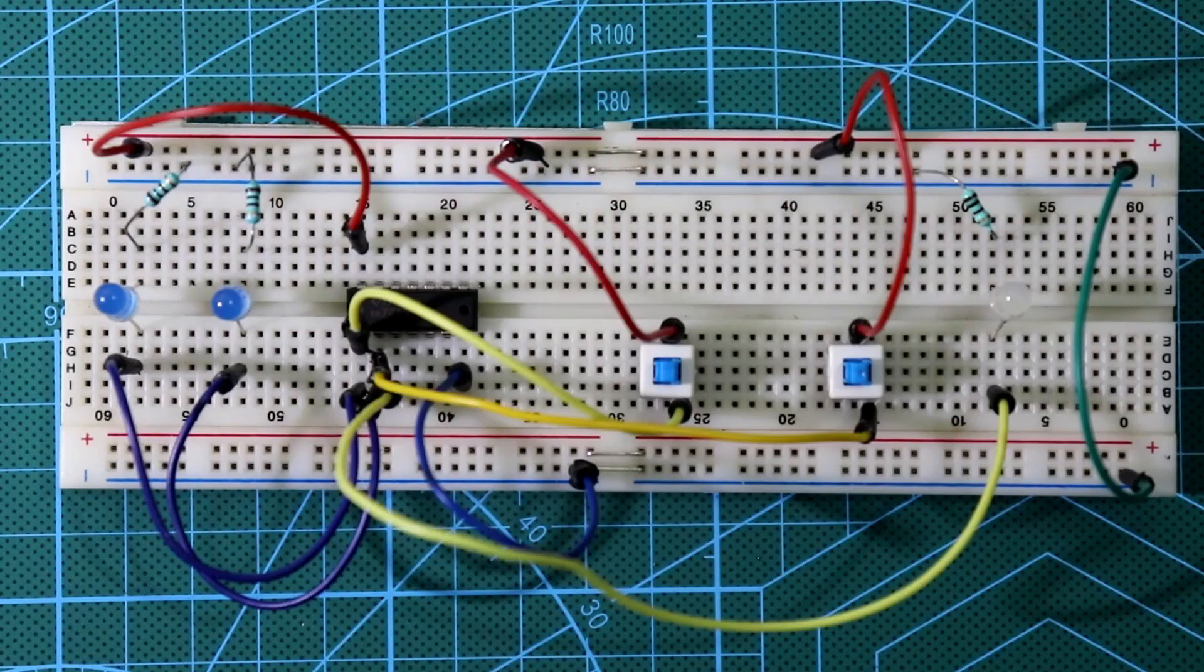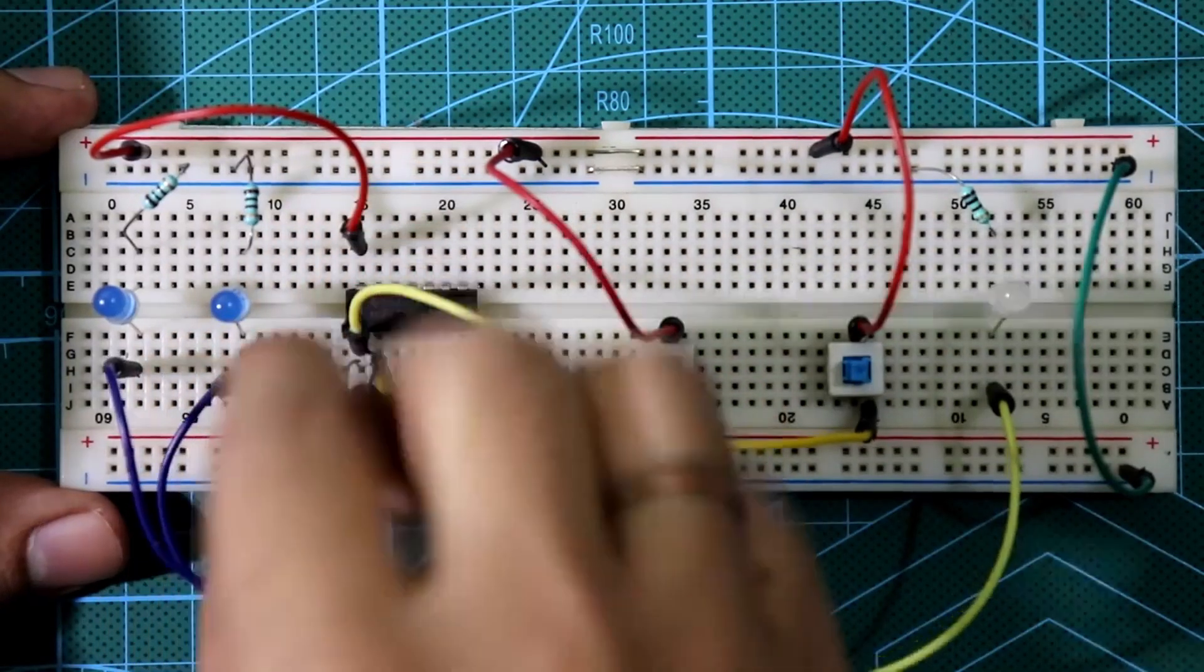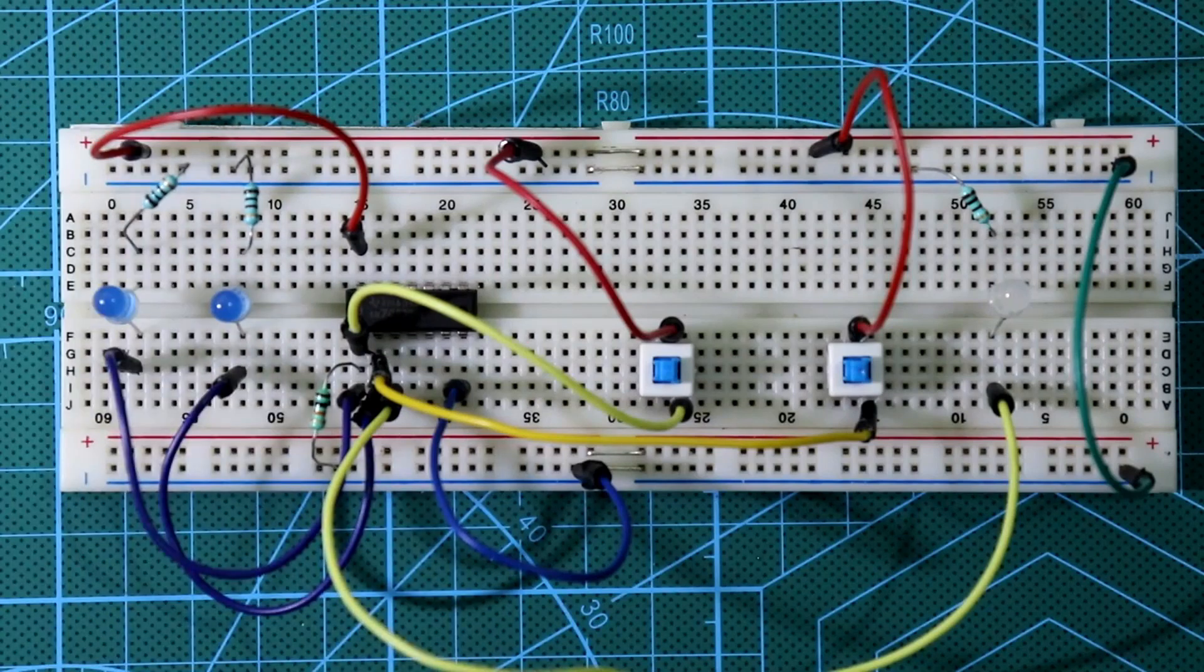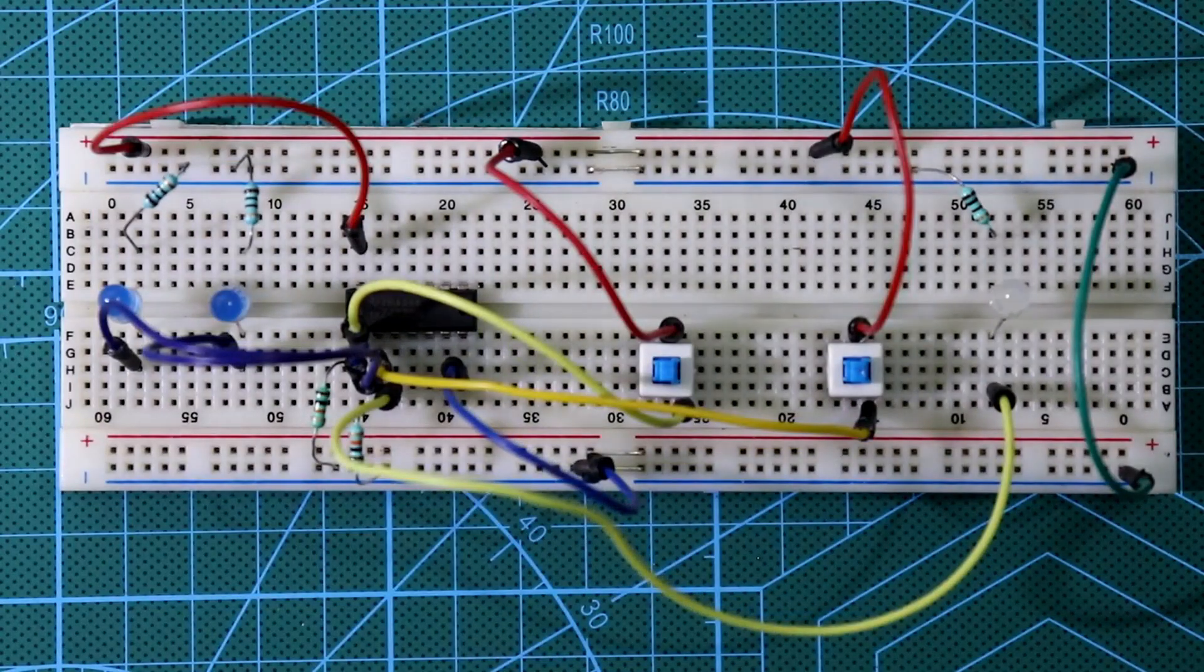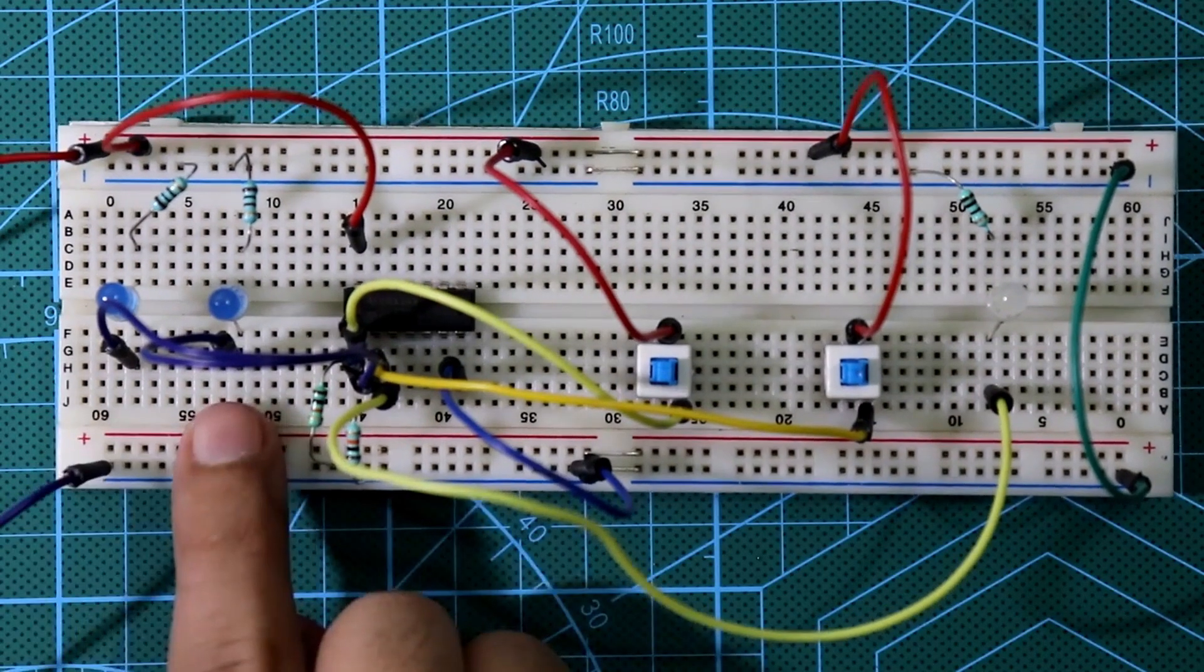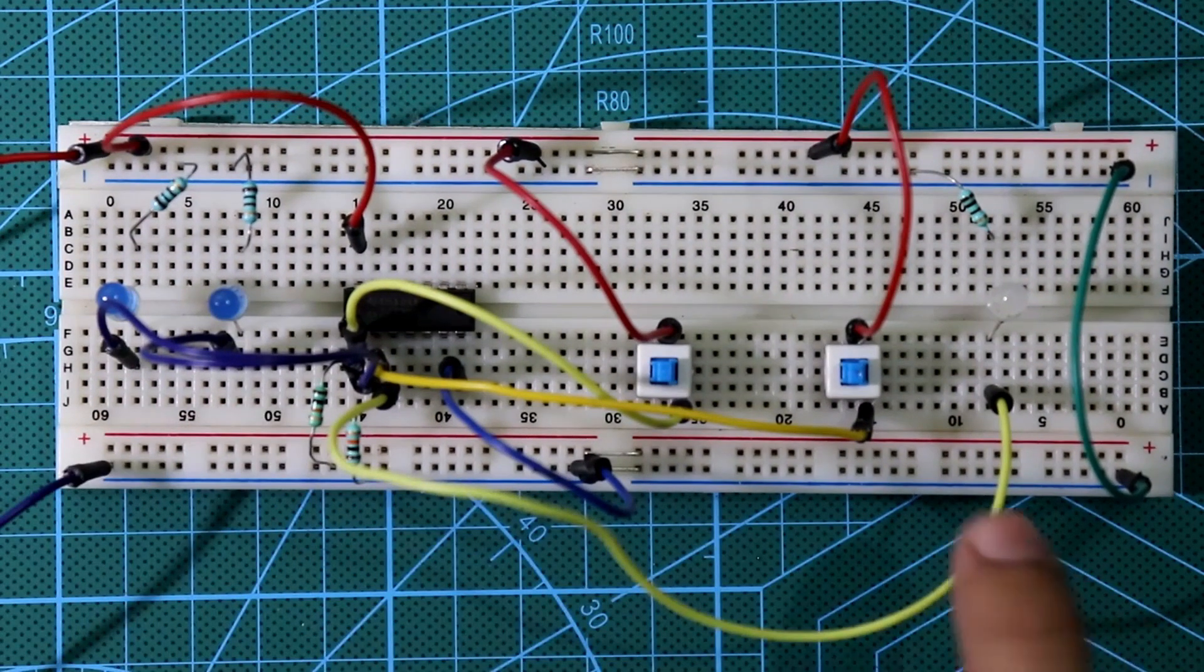Now let's come to the breadboard connection. 10 kilo ohms resistor is connected between pin number 1 and ground. Pin number 1 here and ground here. One is connected and another. So we have connected our pull down resistor. Let's see again. Connect the power supply. Now see, we are not getting any output here.